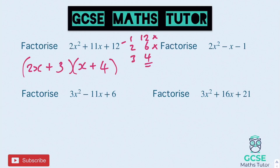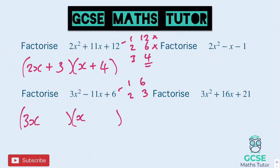Onto the one below: 3x squared, so we're going to have a 3x and an x. One of the factors is going to triple. Factors of 6: 1 and 6, or 2 and 3. To make 11 — I don't want 1 and 18, or 3 and 6, so it's going to have to be 2 and 3. I could have 6 and 3, which would make 9, or 2 and 9, and I can make 11 out of 2 and 9. So I want the 3 to be tripled to make 9. We're trying to make negative 11 with positive 6 at the end, so they're both negative: 3x minus 2 and x minus 3.